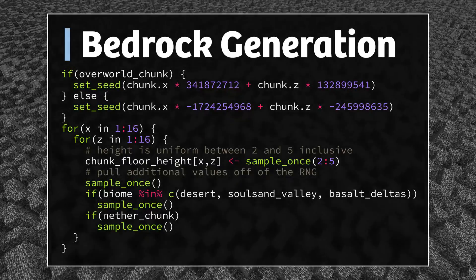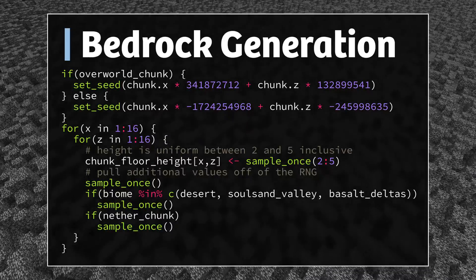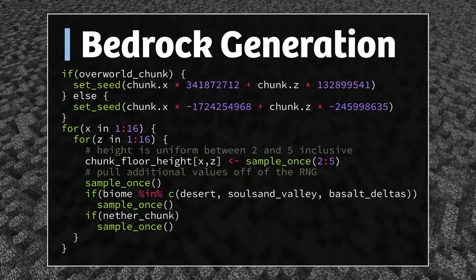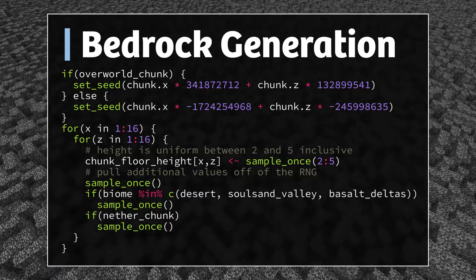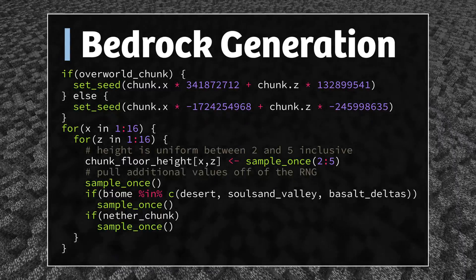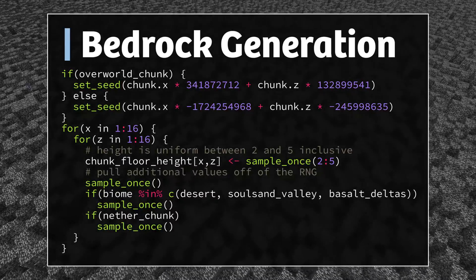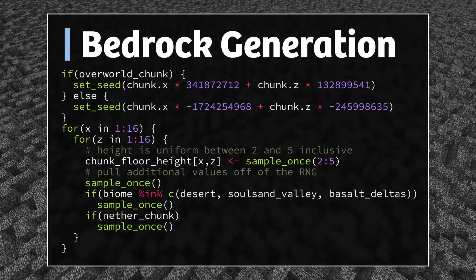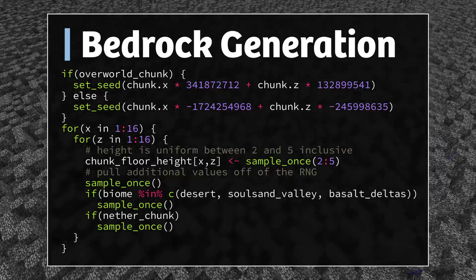The overworld and the nether do set their seeds differently per chunk, so chunk 0,0 in the overworld is not going to have the same bedrock as chunk 0,0 in the nether. Once the random number generator seed is set, the game then goes through each of the 256 x and z pairs of coordinates in the chunk, samples a number between 2 and 5, and that determines the height of the bedrock. At a coordinate there could be 2, 3, 4, or 5 bedrock blocks at the bottom of the world, uniformly distributed. The game then samples a couple more times off the RNG before determining how much bedrock is in the next coordinate of the chunk.